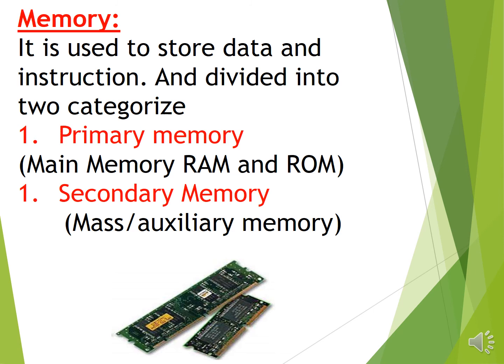The next component is memory. Memory is used to store data and instructions, and it is divided into two categories: primary memory and secondary memory. Primary memory is used during the internal processing of the computer and includes RAM and ROM. Secondary memory is all external or auxiliary memory of the computer.